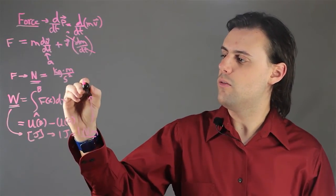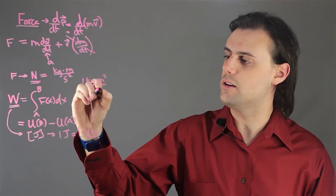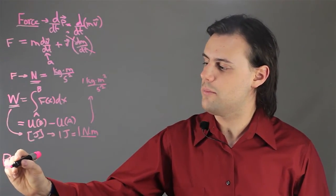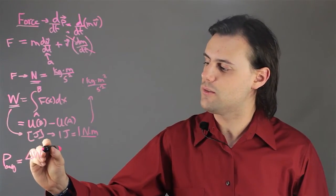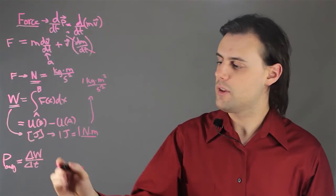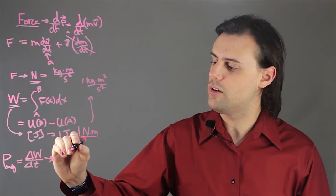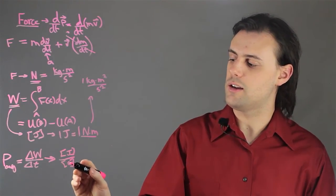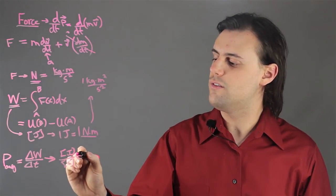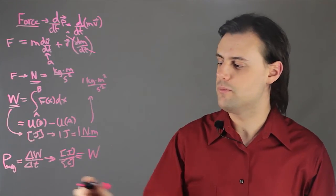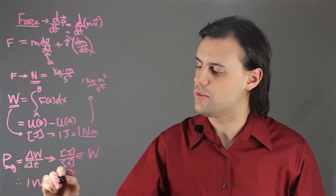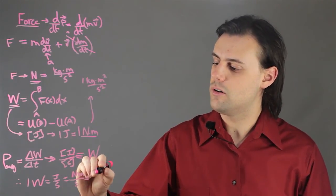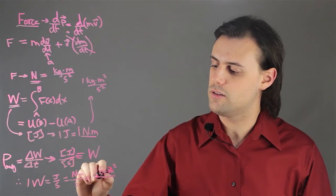One joule is equal to one kilogram times meters squared divided by seconds squared, since we're multiplying that meter into the definition of a newton. Average power, for example, will be defined as the change in the energy of a system divided by the change in time. This has units of joules per second, defined as a watt. Therefore, one watt is equal to one joule per second, which is equal to one newton meter per second, which is equal to one kilogram times meters squared divided by seconds cubed.